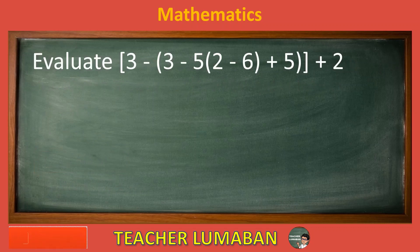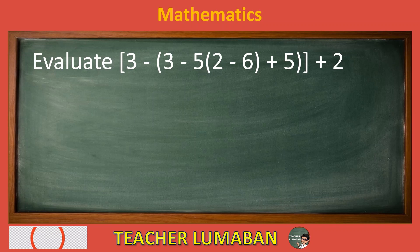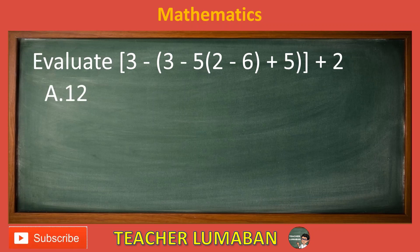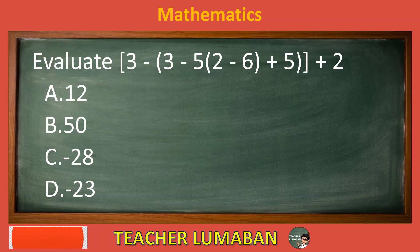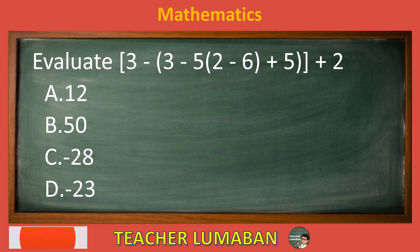Evaluate 3 minus (3 minus 5), 2 minus 6, plus 5, plus 2. Letter A: 12. Letter B: 50. Letter C: negative 28. Letter D: negative 23. Choose the suitable answer based on the given choices in 5 seconds.